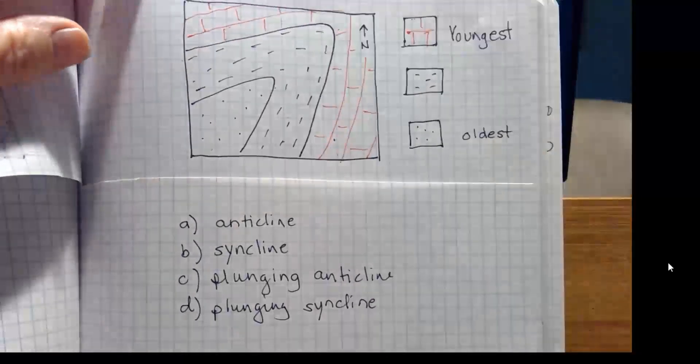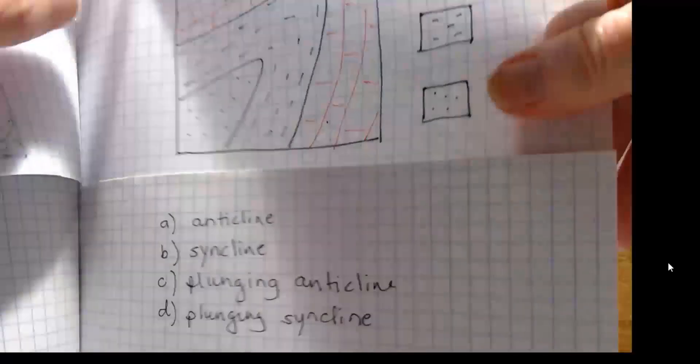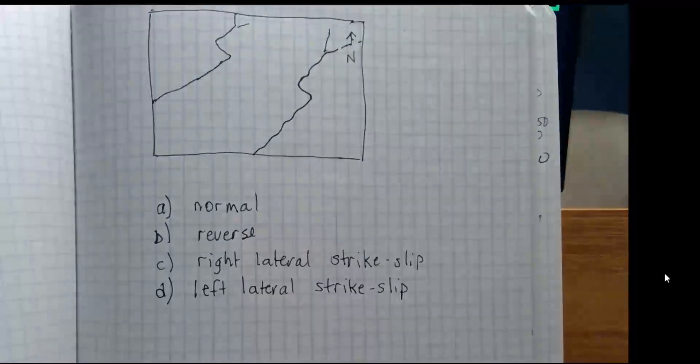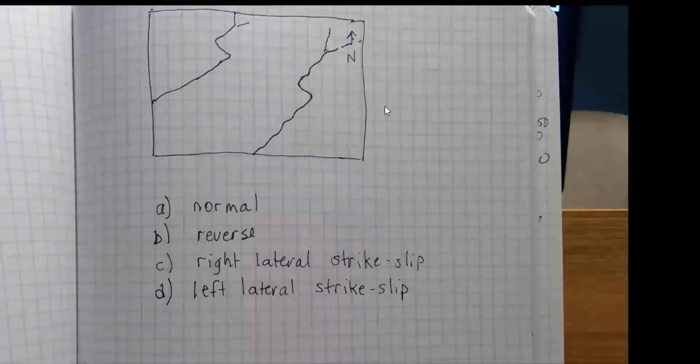How about a fault question? Here's a map, just a regular old map, and it's showing two streams that are clearly offset. So does the map indicate there's a normal fault here, a reverse fault, a right lateral strike slip fault, or a left lateral strike slip fault?